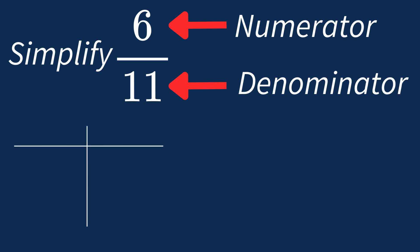First, let's list out the factors for each. For 6, the factors are 1, 2, 3, and 6.